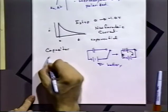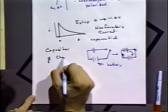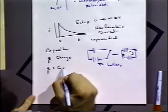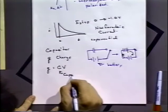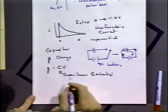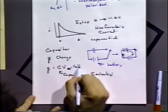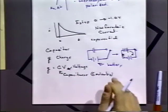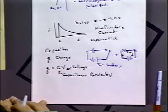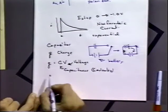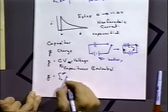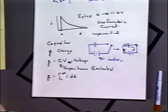How much charge flows? The charge Q equals the capacitance times the voltage: Q = CV, in coulombs. Whatever the battery voltage and the capacitance are determines how much charge flows. We can calculate it from the capacitance and voltage, or if we don't know the capacitance, we can integrate the current from zero to infinity to get the charge that way.